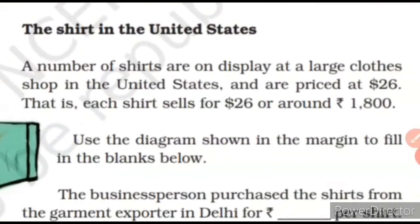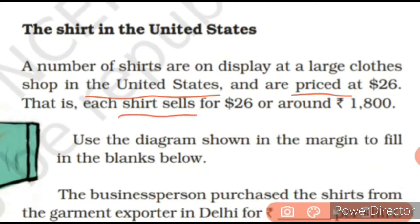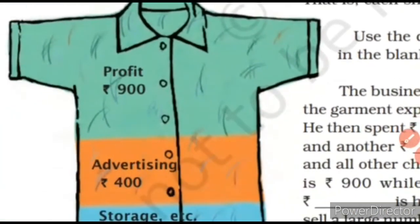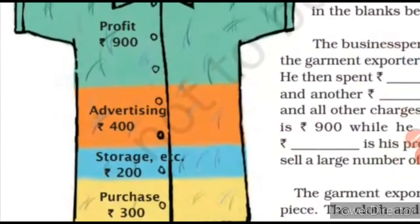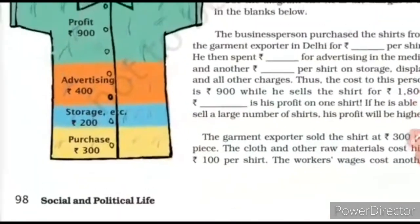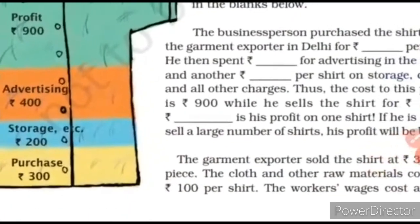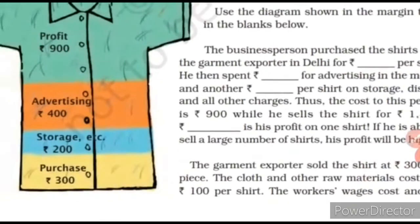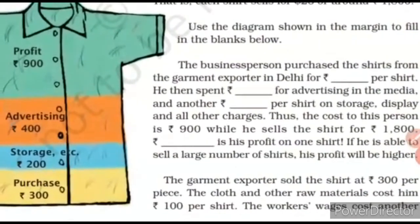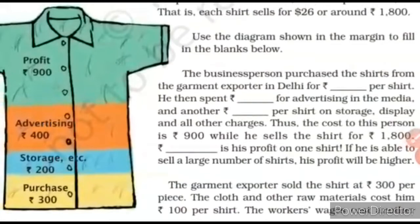A number of shirts are on display at a large clothes shop in the United States, priced at 26 dollars — that is, each shirt sells at 26 dollars, or around Rs. 1,800. We may see in this picture that the business person purchased the shirt from the garment exporter in Delhi. He then spent Rs. 400 for advertising in the media and another Rs. 200 per shirt on storage, display, and all other charges. Thus the cost is Rs. 900, while he sells the shirt for Rs. 1,800.